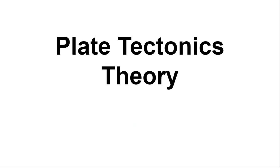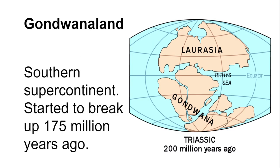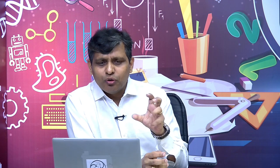Plate tectonics is a theory which deals with how the movement of plates takes place. There are different types of plates: convergent plates, divergent planes, and transform plate boundaries. India, once upon a time, was not in its present location. As we can see in this map, India was part of Gondwana land. Approximately 175 million years ago, there was a super continent known as Pangaea, which had two parts: the upper part was Laurasia and the southern part was Gondwana land.